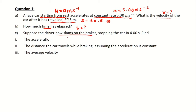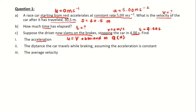For question c, the same situation but now the driver slams on the brake. This means the initial velocity for this situation is actually the final velocity obtained in question a. Since the car will stop, the final velocity is zero meters per second, and the time taken to stop is four seconds. The question asks to find the acceleration, the distance traveled, and the average velocity.